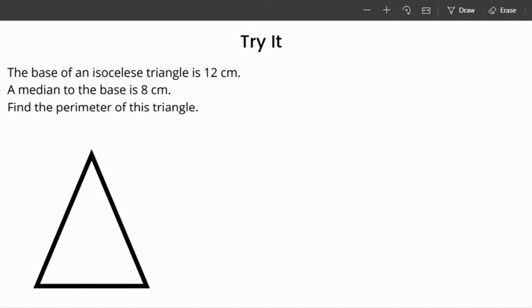Since the question tells us that the triangle is an isosceles triangle, I know that this side equals that side. This angle equals that angle. The base is the side that's not the same as the other two sides, so this one is 12 centimeters.